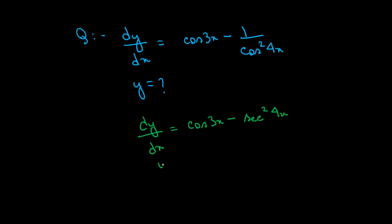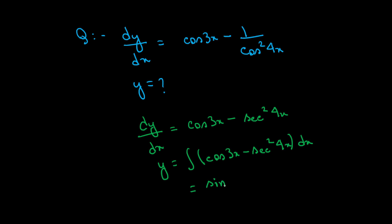So y is equal to the integration of cos 3x minus sec square 4x dx. If we integrate cos 3x, the result is sin 3x divided by 3.